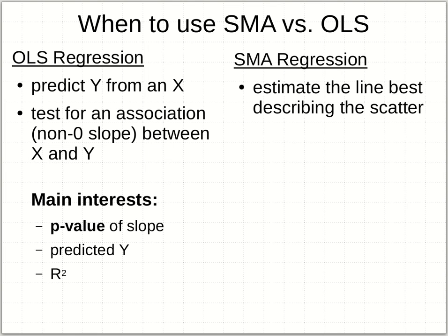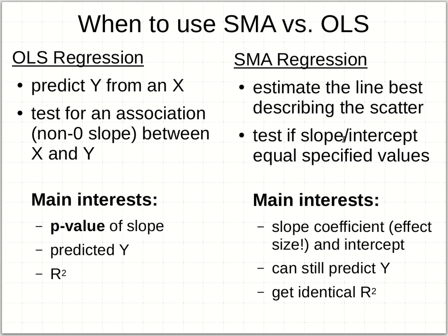You're drawing a line through a cloud of points, but notice that OLS is really only trying to predict a y from an x — like if you developed standard curves in chemistry and then tried to predict a value from another value. That is a fairly specific goal from an ordinary least squares regression, whereas SMA is doing the job that we probably think more often a regression is doing: estimating the line that best describes the scatter. The main interests of an OLS regression are to test for an association, see if the slope is non-zero, and you want to know if there's that non-zero slope between x and y.